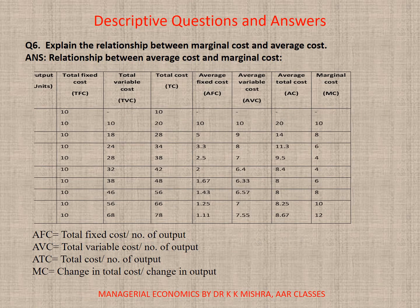Question number six: explain the relationship between marginal cost and average cost. Theoretically we can define the marginal cost and average cost relationship. Here we have taken a data where outputs — though they are not visible — are in column one, two, three, four, five. You can consider total cost here.